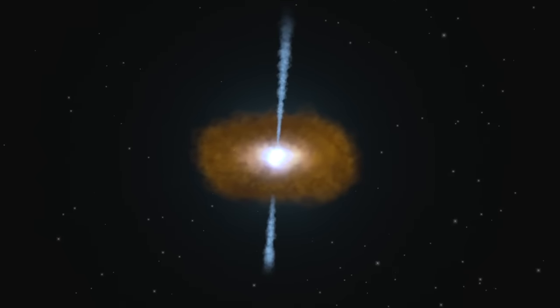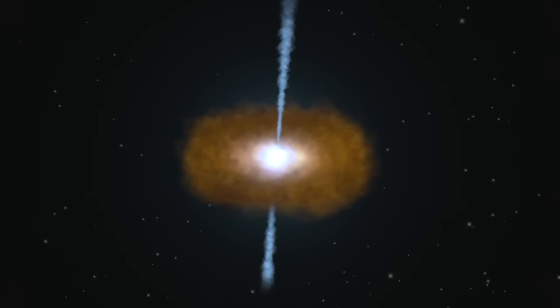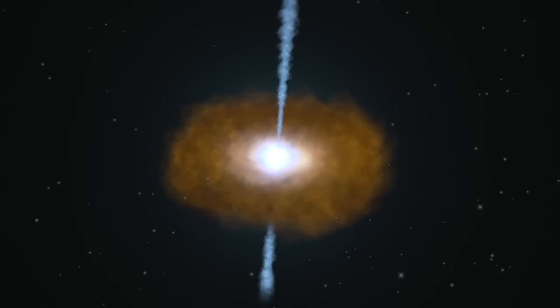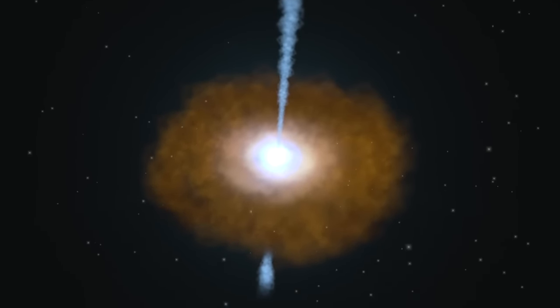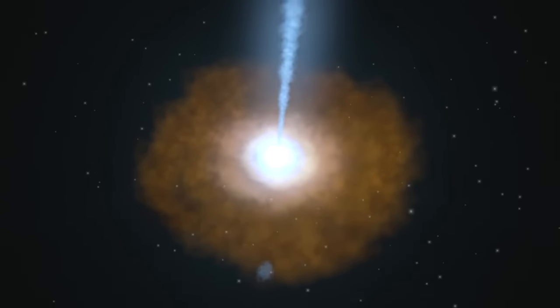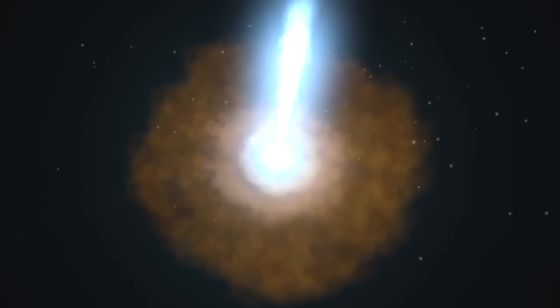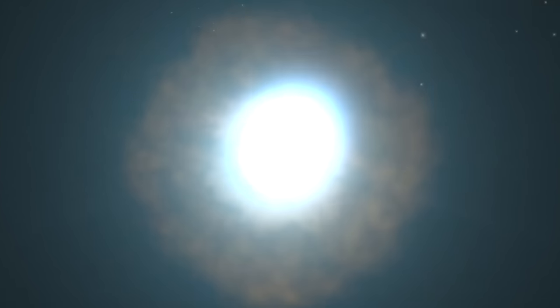Like all active galaxies, a blazar gets its energy from matter falling toward a central supermassive black hole. A small part of this material forms particle jets that travel outward in opposite directions at near the speed of light. What makes blazars so intense is that we happen to be looking almost directly down the jet.